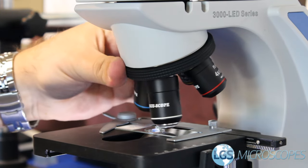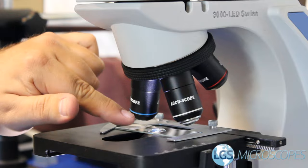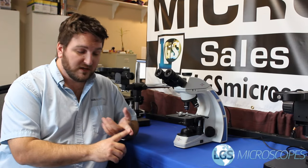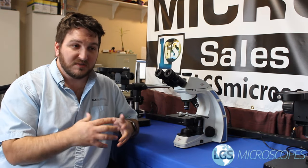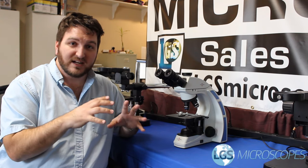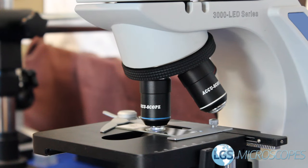Now a 40x objective is not sealed properly to keep out the oil and just like any other kind of oil, it always just gets where you don't want it to be. It works its way into all these cracks and crevices and it does the same thing inside of an objective. If oil ever gets inside of an objective it's almost impossible to remove it.